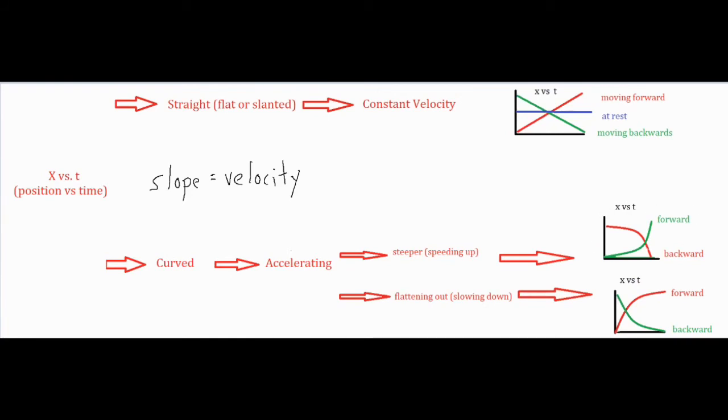If your graph is getting flatter and flatter, which means your slope is decreasing, that means your velocity is getting lower and lower, which means that you are slowing down and your graph will look like one of these two right here.